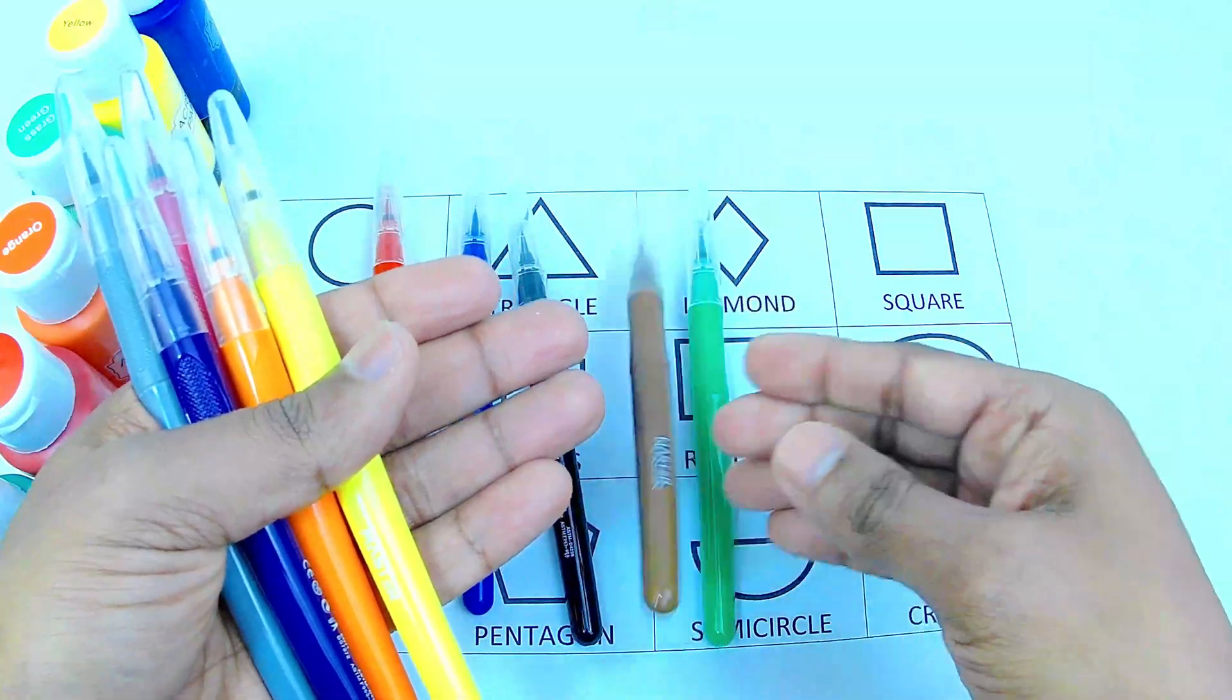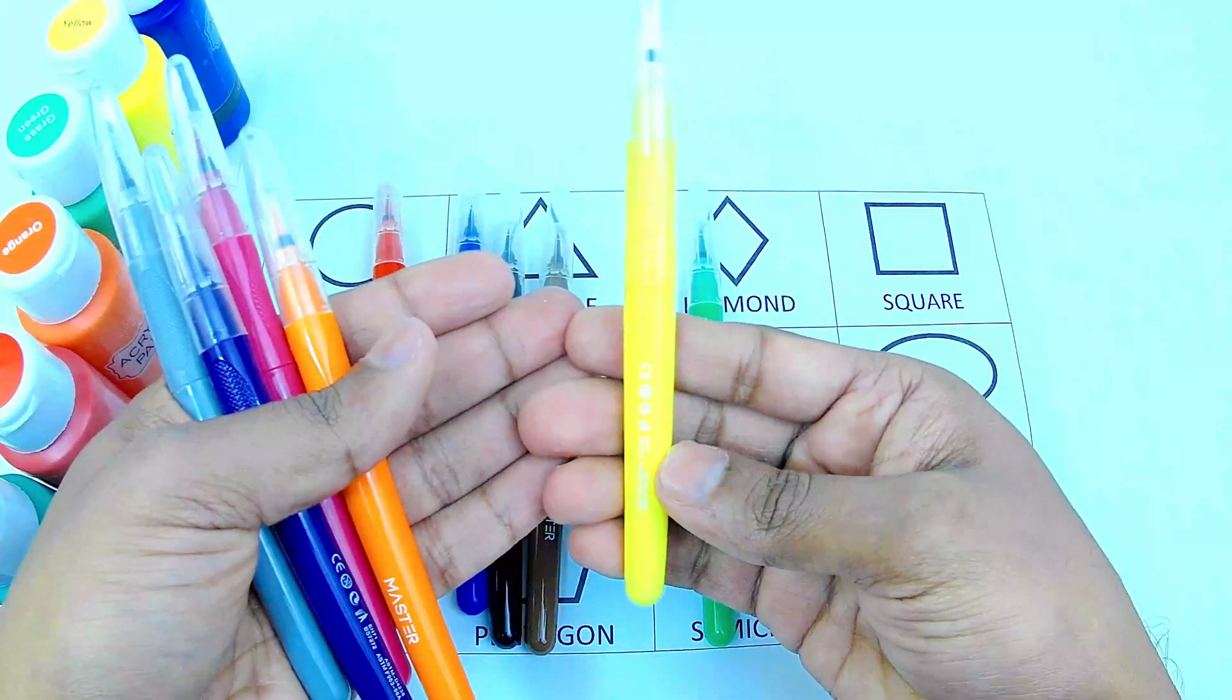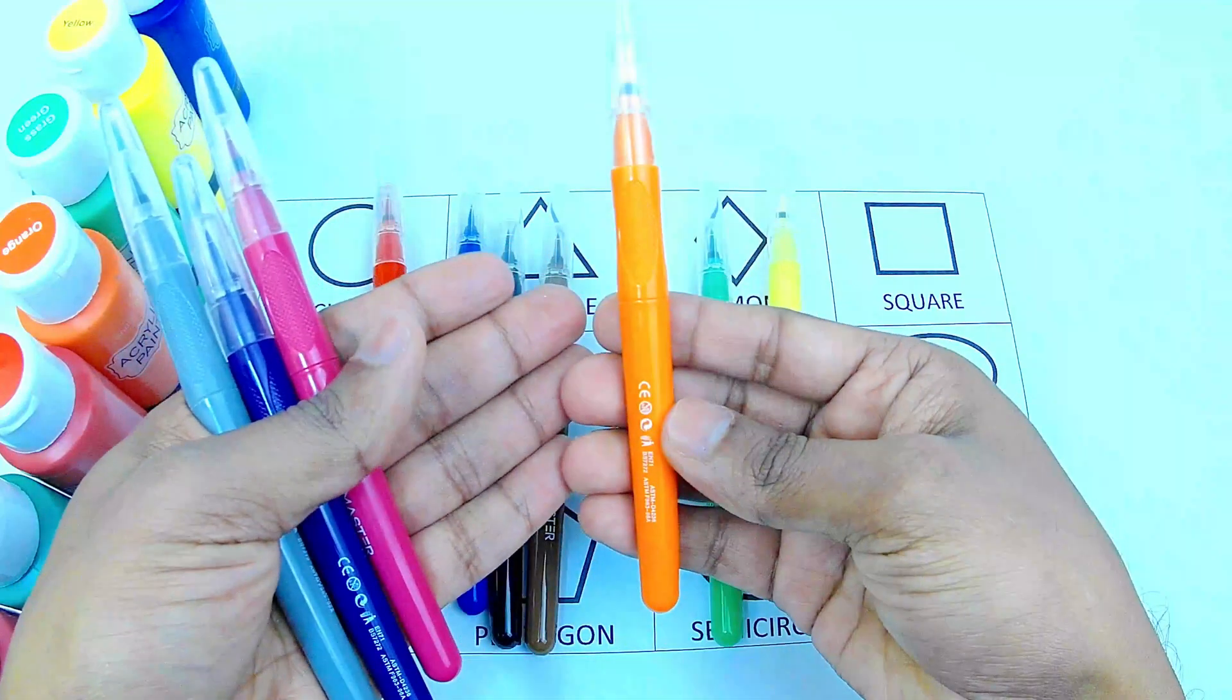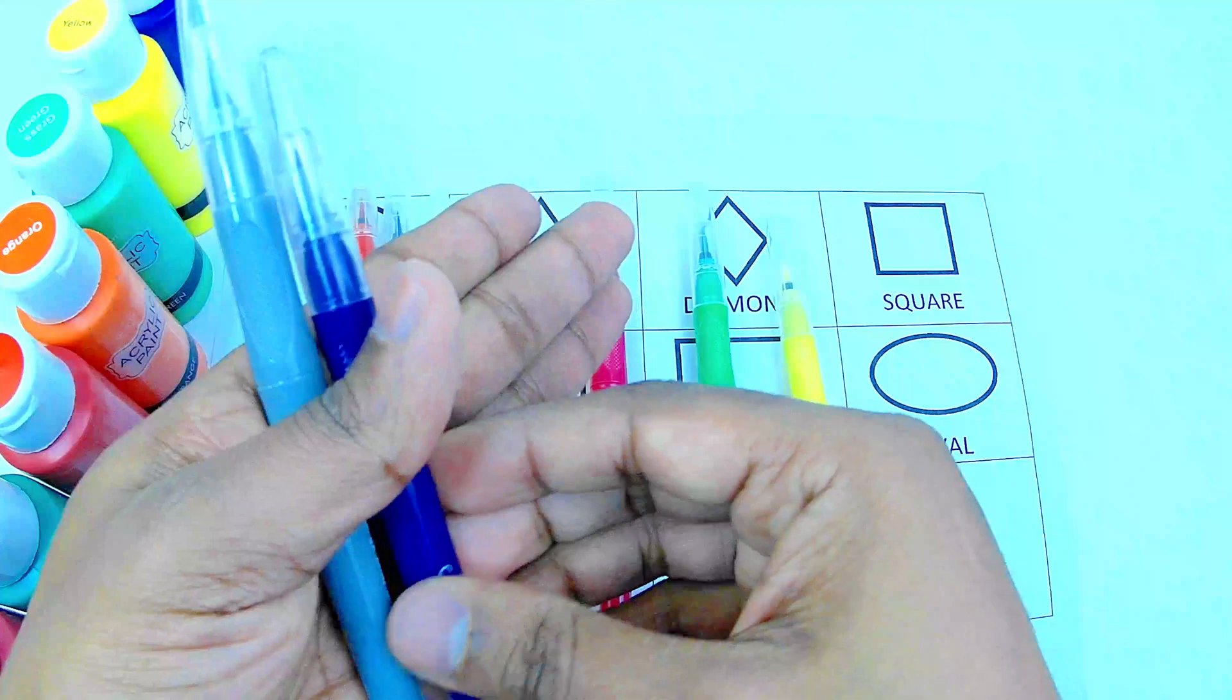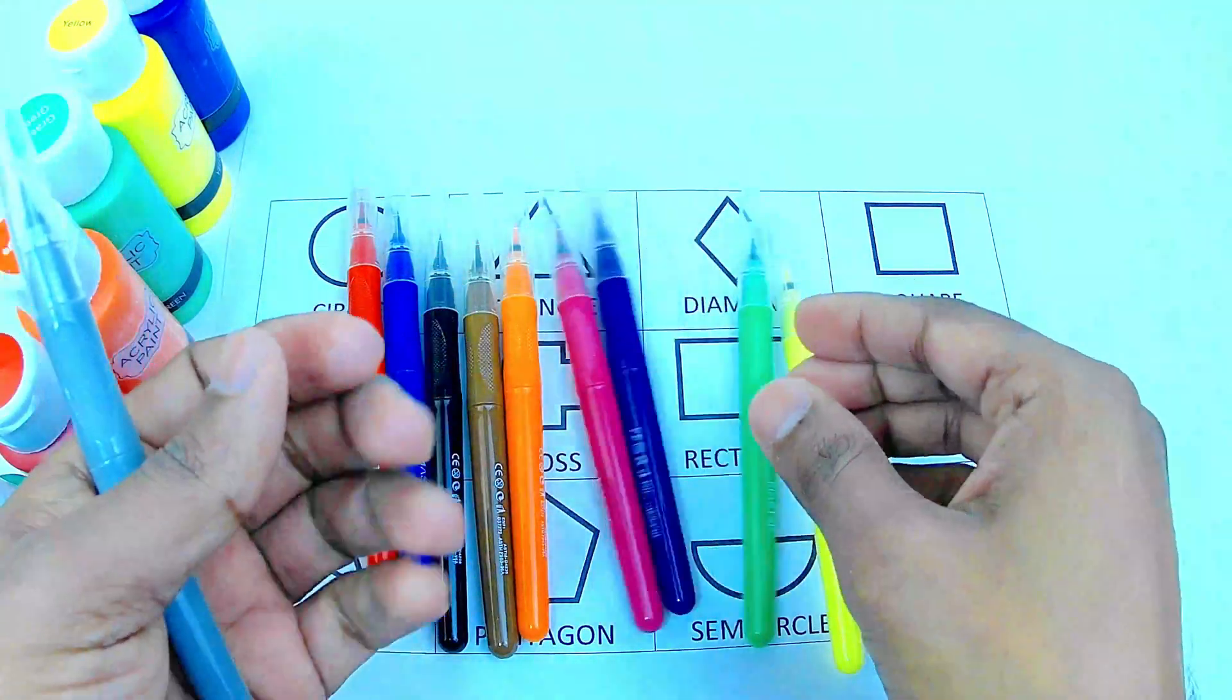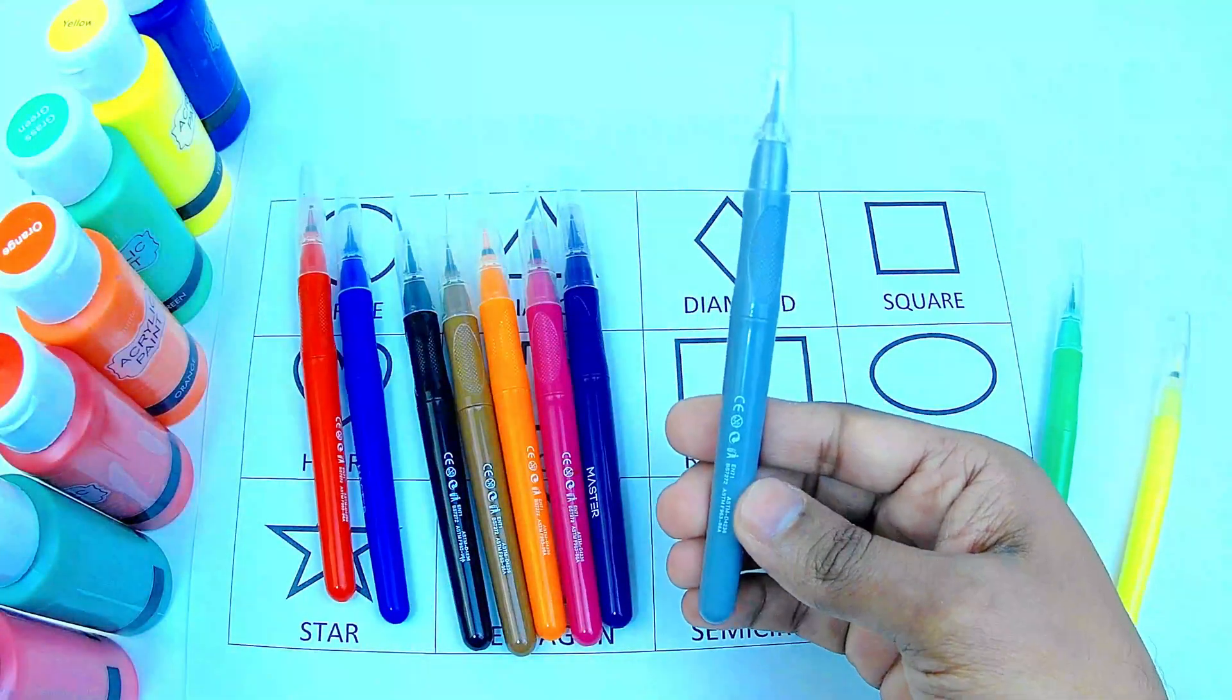Brown color, yellow color, orange color, pink color, purple color. Finally we have gray color.